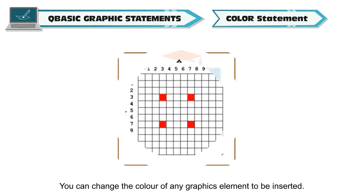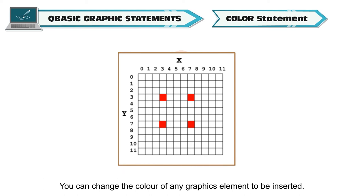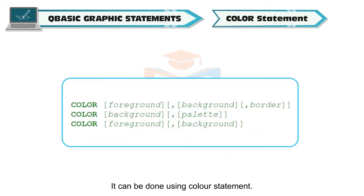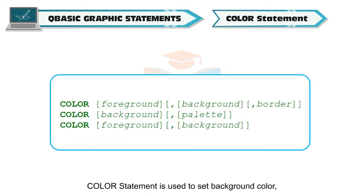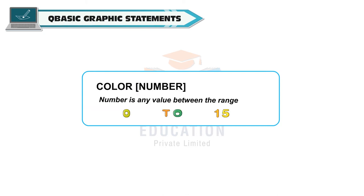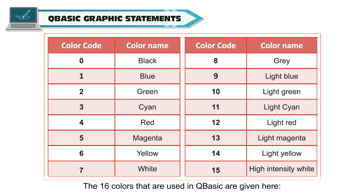Color statement: You can change the color of any graphics element to be inserted. It can be done using the color statement. Color statement is used to set background color, foreground color and border color for various screen modes. The syntax for the color statement is: COLOR number, where number is any value between the range 0 to 15.